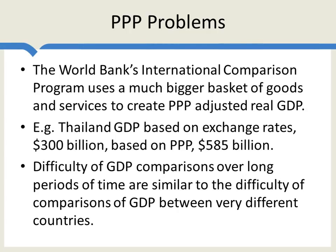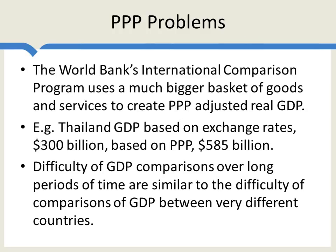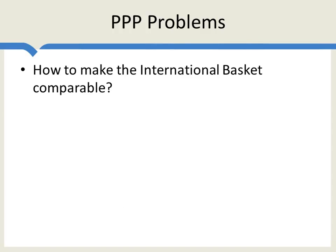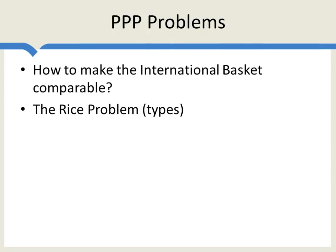We have very similar problems when trying to make comparisons of GDP between very different countries. So how are we going to make this international basket comparable? We have a number of problems. First, I'll call the rice problem. Rice seems like something we ought to be very easily able to compare across countries. But when you look in more detail, you say: are you comparing long grain rice or short grain rice? Brown rice or white rice? Uncle Ben's or Kismet rice? So all kinds of different types of rice, and we need to try as best as we can to account for those differences.